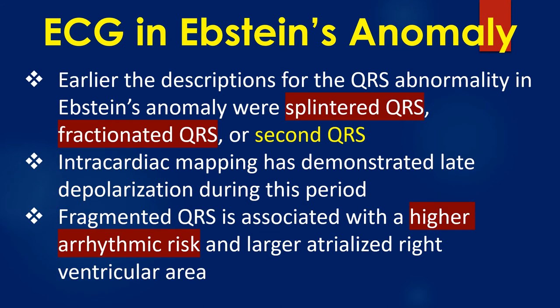Earlier, the descriptions for the QRS abnormality in Ebstein's anomaly included splintered QRS, fractionated QRS, or second QRS. Intracardiac mapping has demonstrated late depolarization during this period. Fragmented QRS is associated with a higher arrhythmic risk and a larger atrialized right ventricular area.